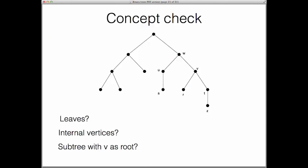So now it's time for another concept check. Go back to the tree we saw earlier and just visually identify all the leaves, all the internal vertices, and draw the subtree that has V as its root. Not all these vertices are labeled so you can just mentally circle the leaves, the internal vertices, and the subtree that has V as its root. So pause the video and do that and then come back when you're done.